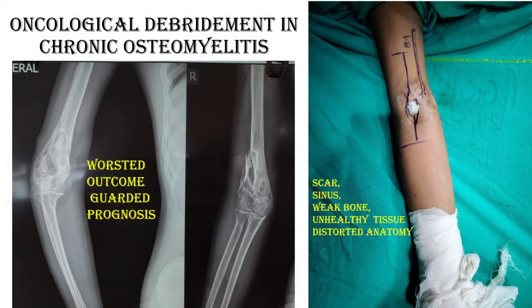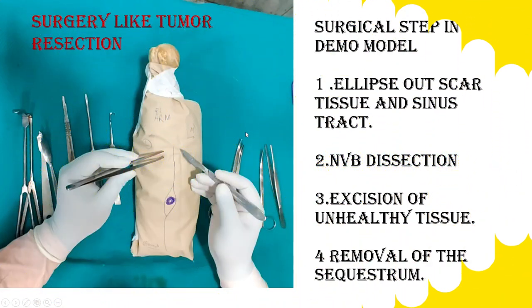Oncological development is an emerging surgical technique for chronic osteomyelitis. This type of case usually gets the worst outcome and prognosis is guarded, because the scar tissue, the sinus, the weak bone, and the unhealthy tissue along with the distorted anatomy makes it very complicated. This type of case must be endeavored with a huge backup plan.